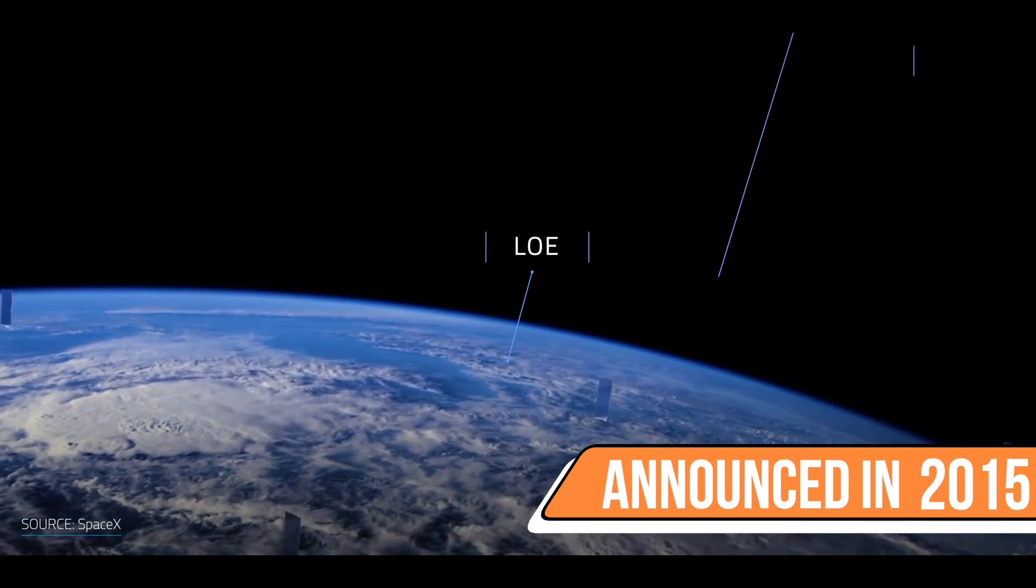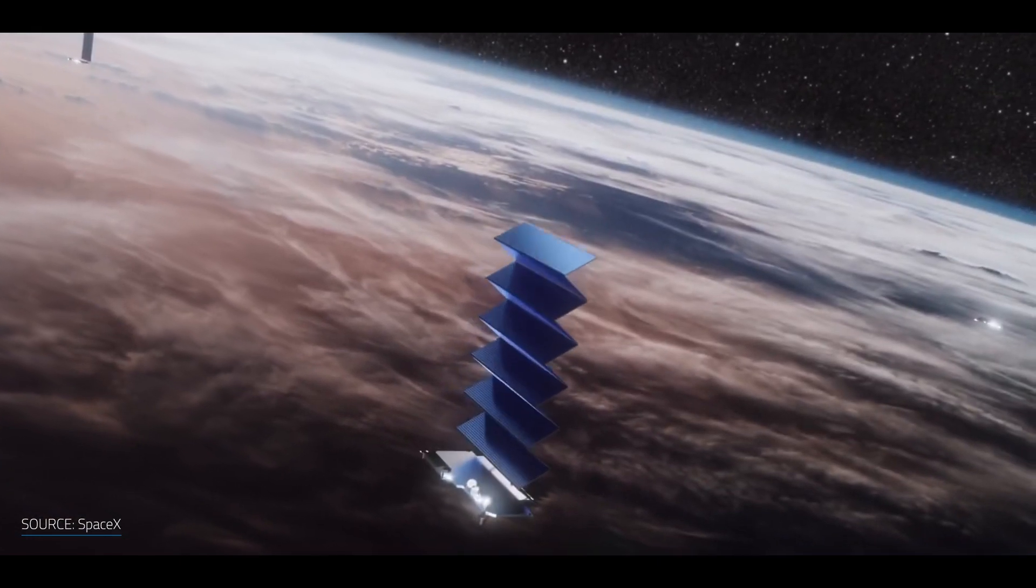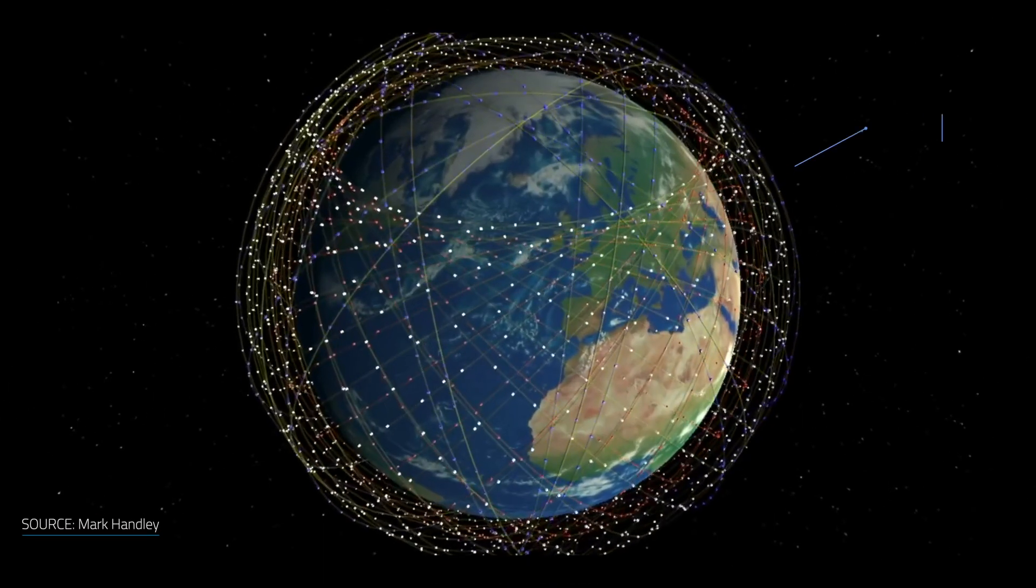The project was first announced in 2015, shortly after Musk had filed documents with international regulators to launch about 4,000 satellites into low orbit.